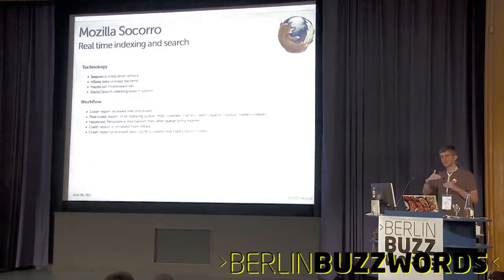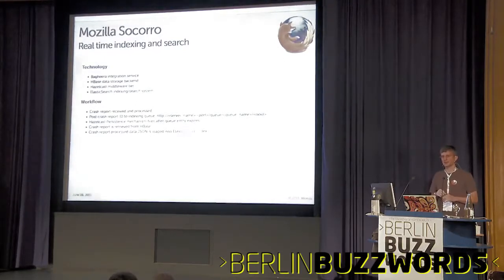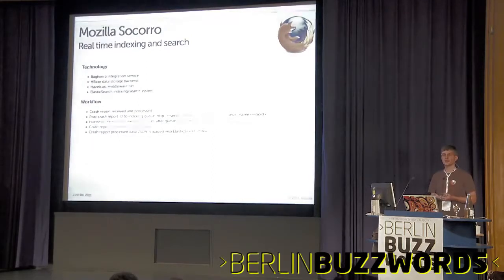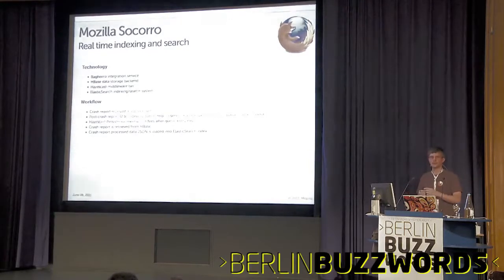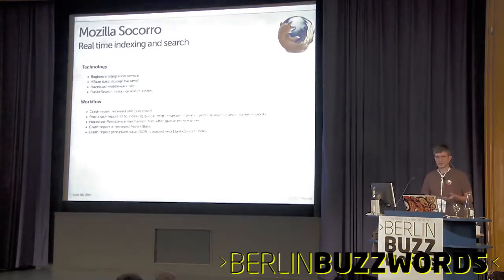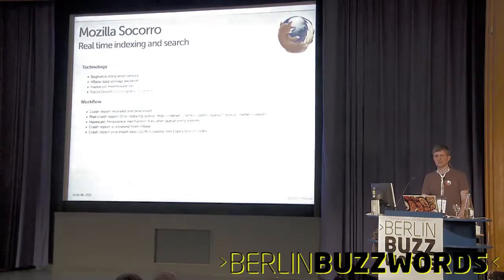Here's where the new system integrates. After a processor finishes, it takes the ID and posts it to the Socorro search service. That posted ID goes into a queue and the Hazelcast persistence layer manipulates the data — we didn't have to write any special queuing mechanisms. We literally wrote only a config file specifying our persistence class that knows how to retrieve data from HBase and post it into Elasticsearch. After it's posted into Elasticsearch, it's available within just a few seconds to be searched by the web app.